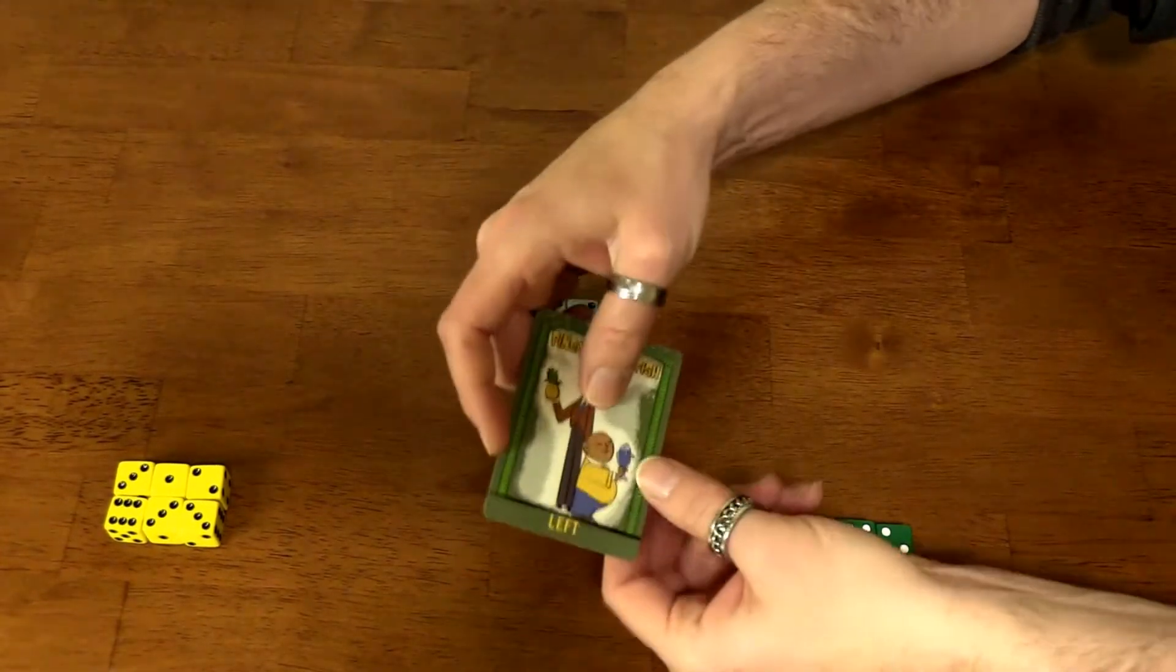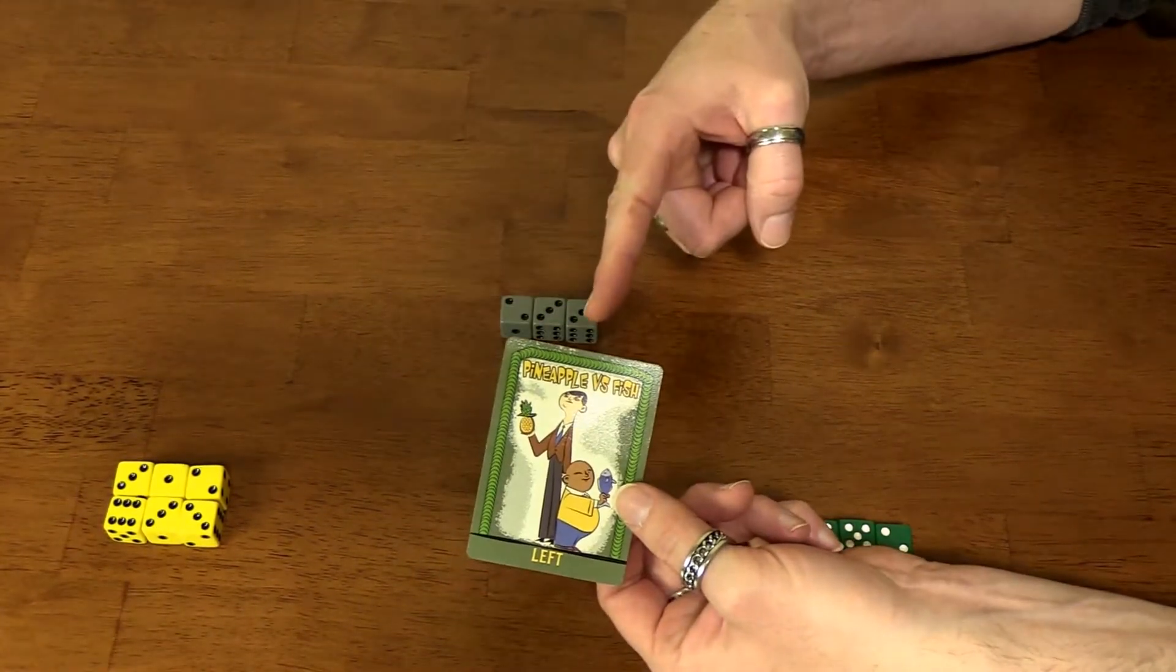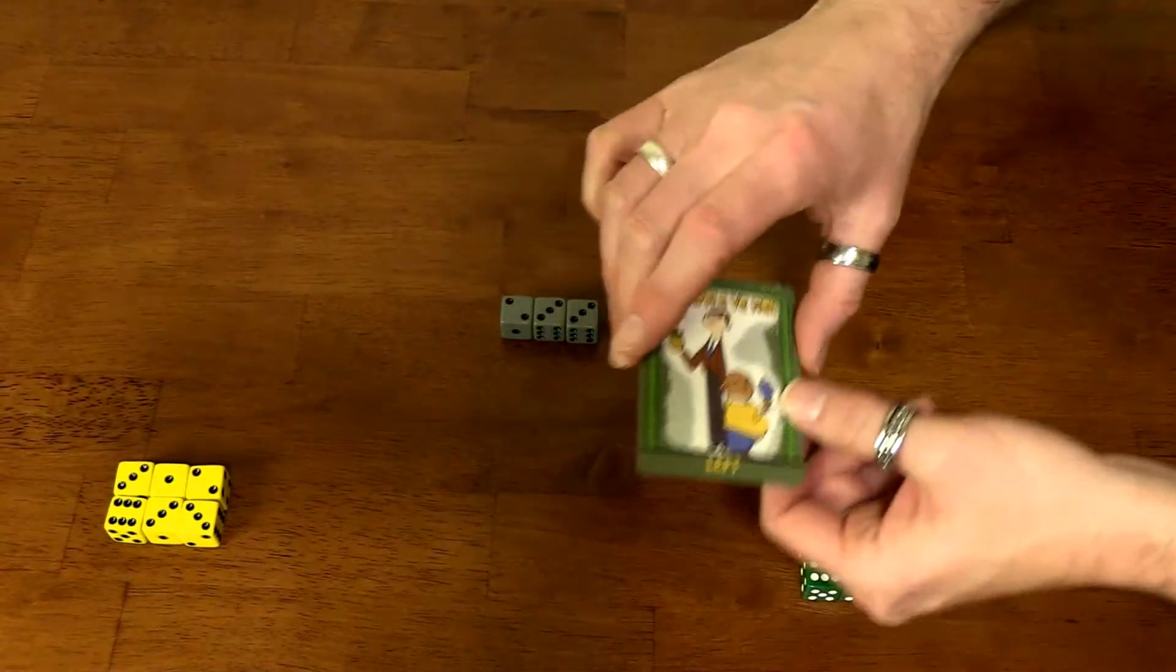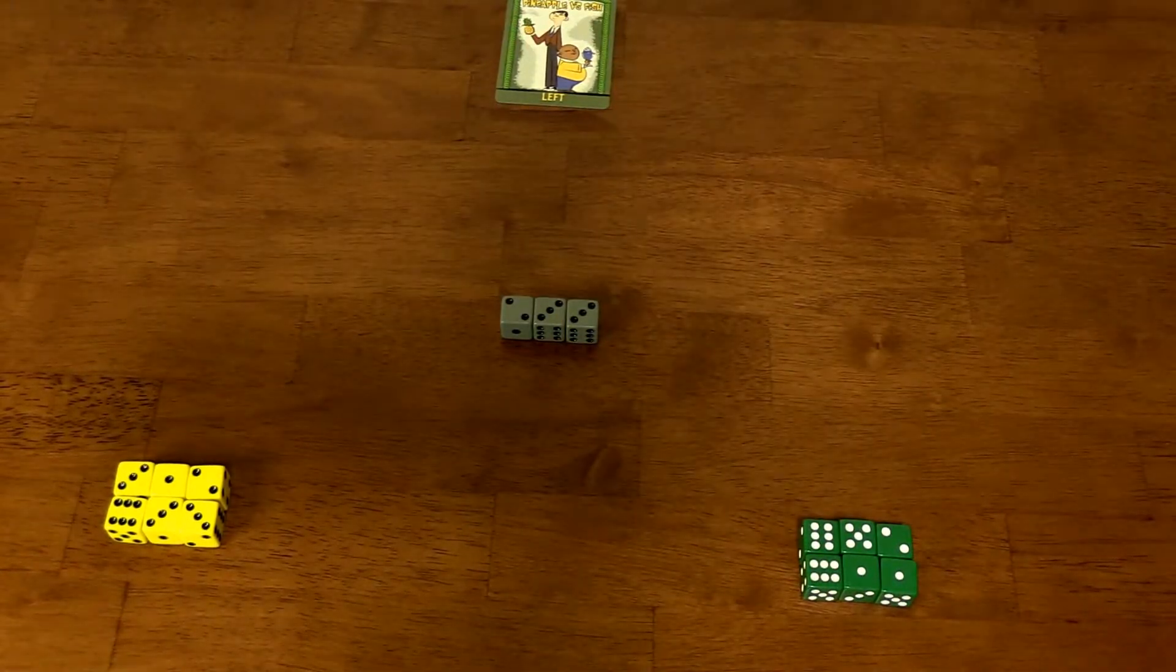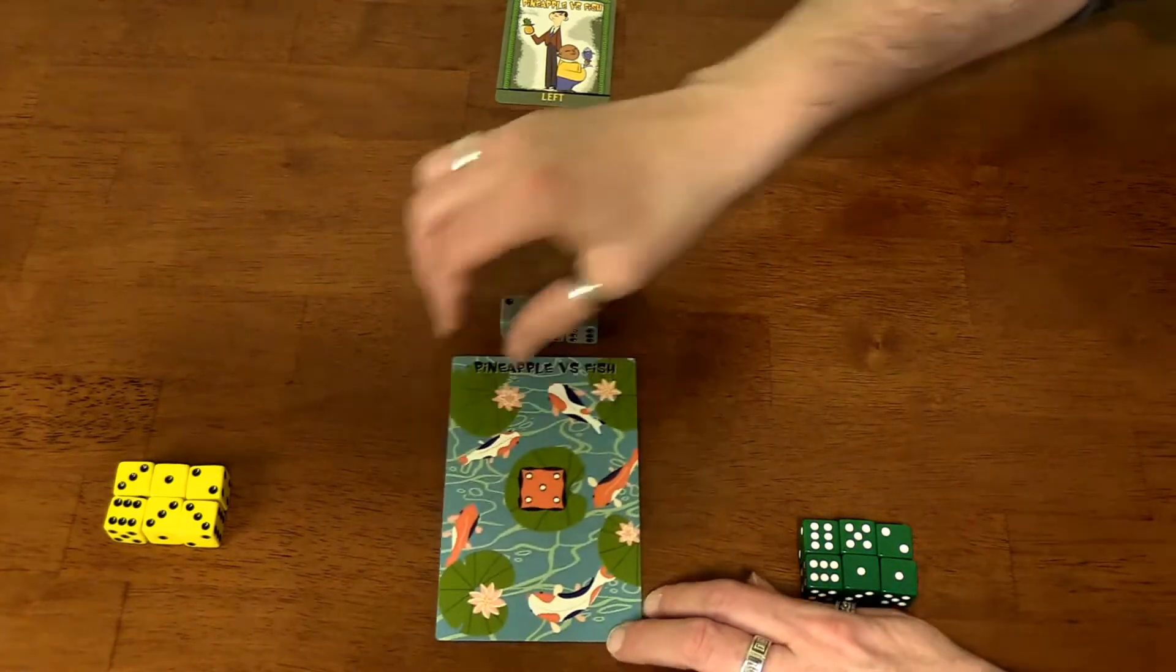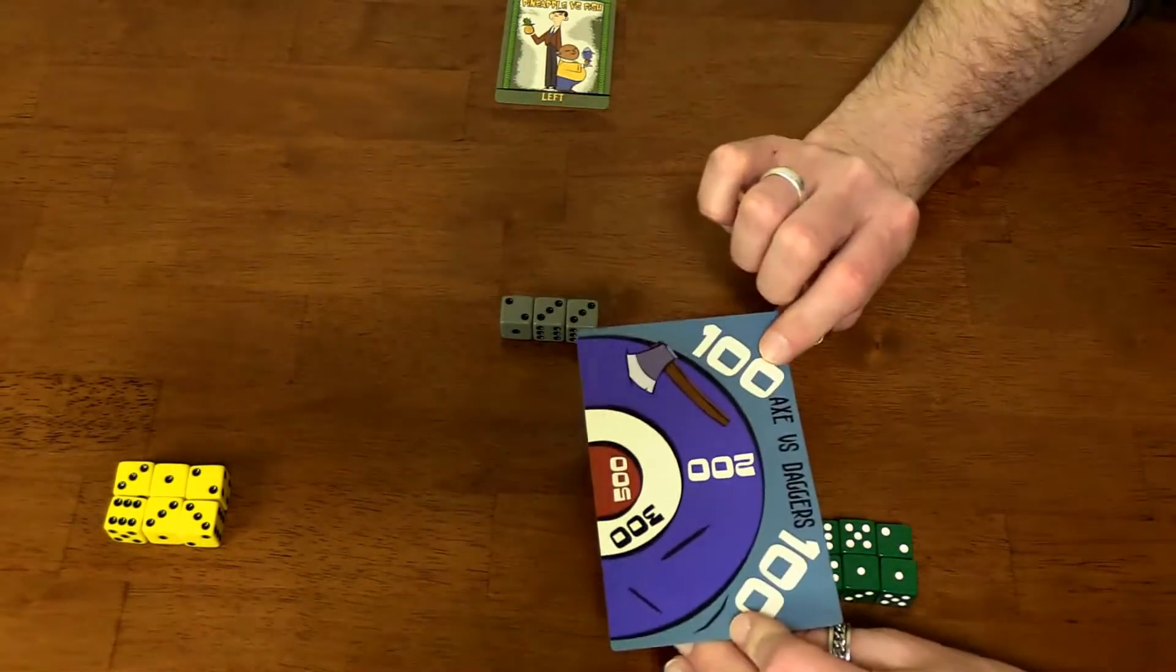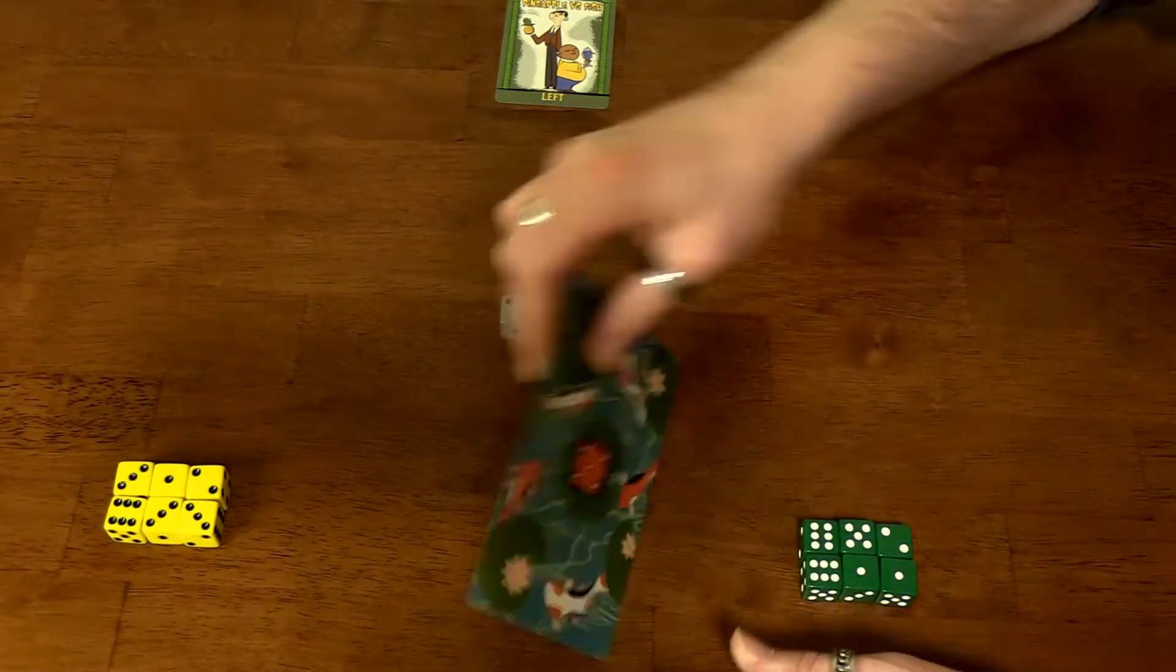This duel is called Pineapple versus Fish, a very unusual dice stacking duel. It uses one of our beautiful playmats here, which are double-sided. The other side of this one has Axe versus Daggers.